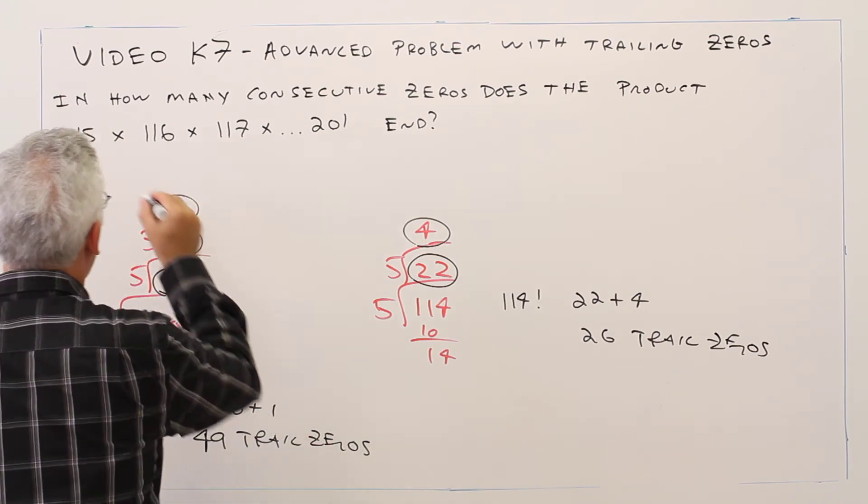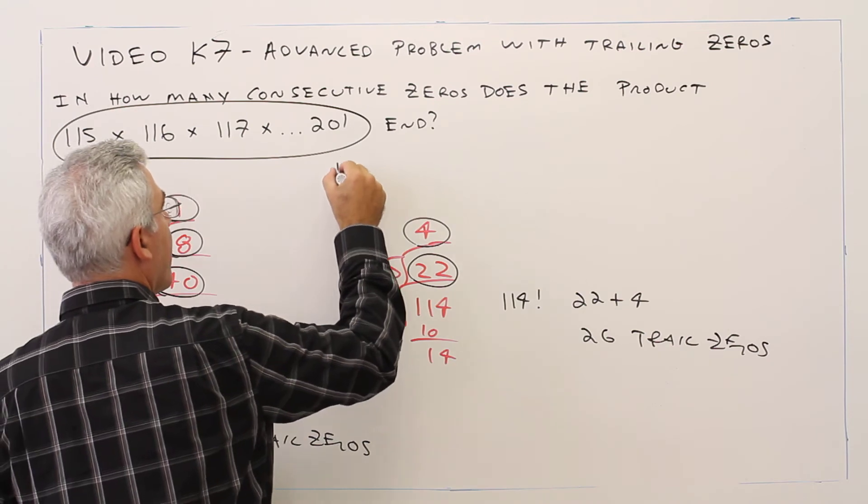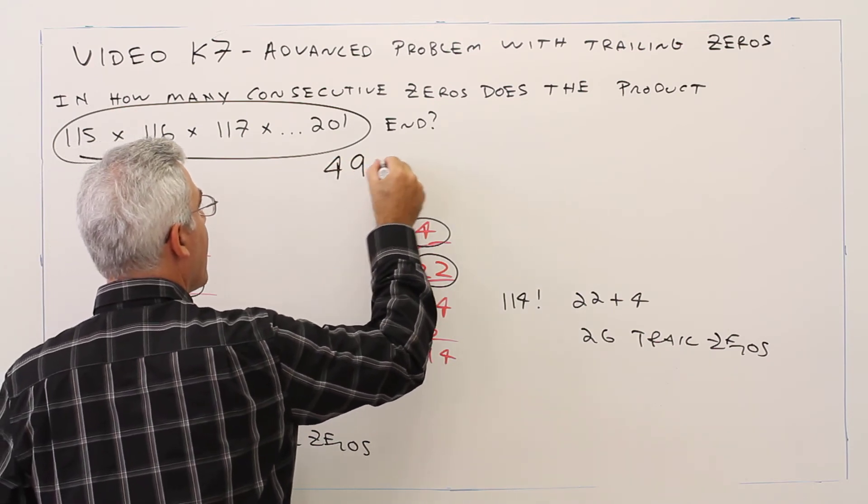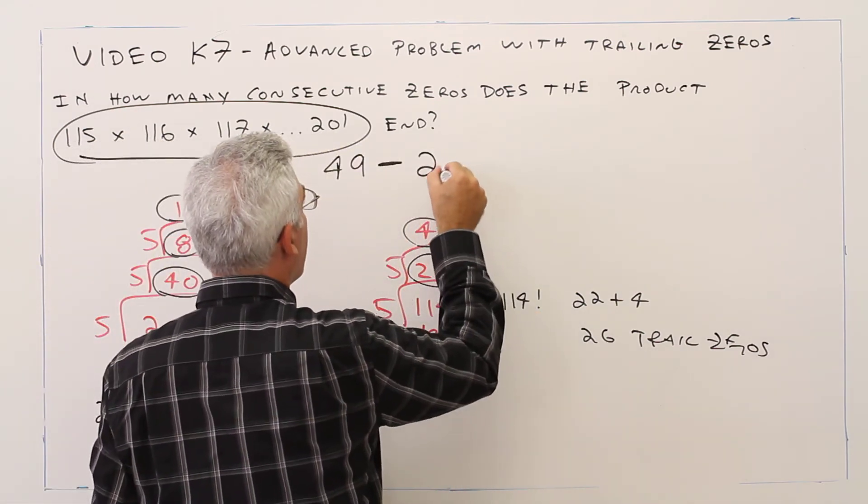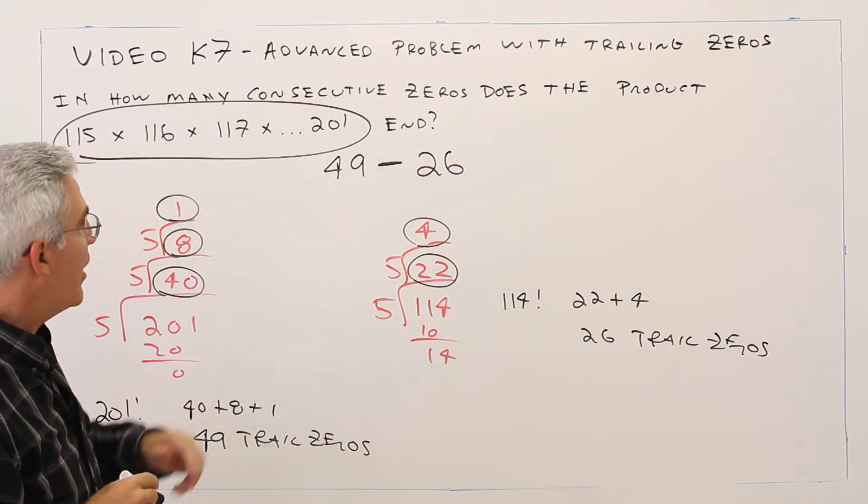So that answers my question. This product will have 49 - 26 = 23 trailing zeros.